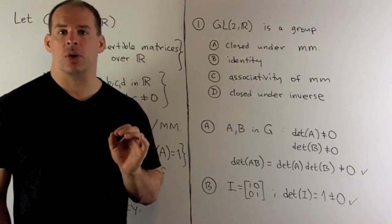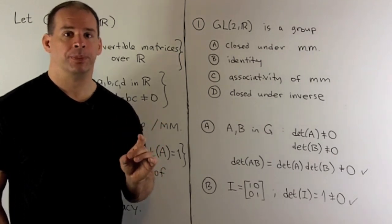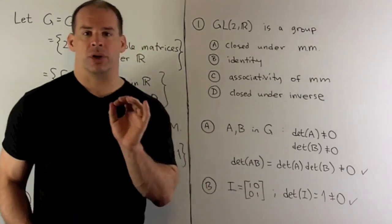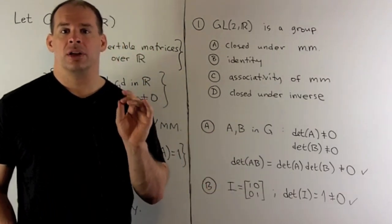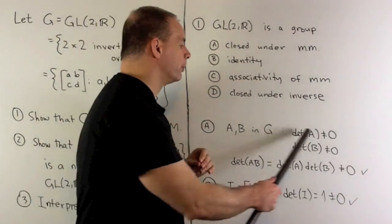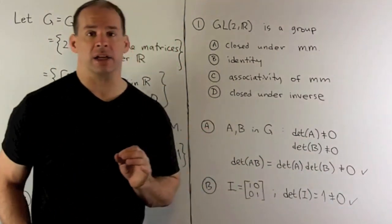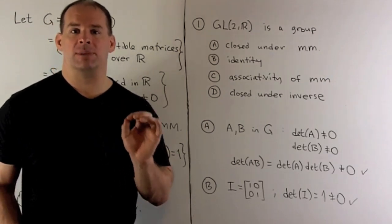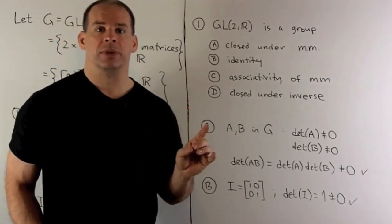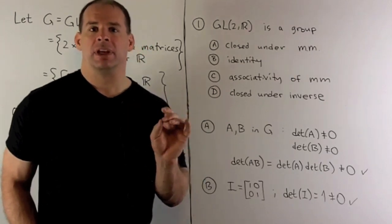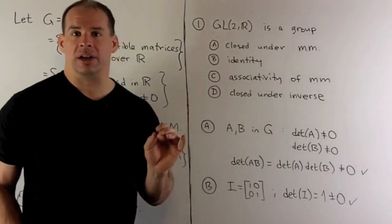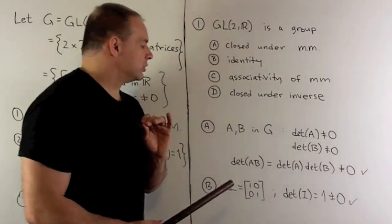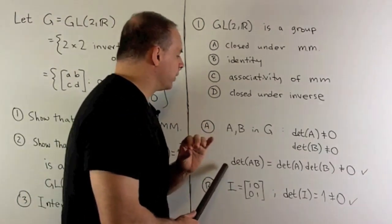Now to see that G is closed under matrix multiplication, we pick A and B in G, so those are going to be two by two matrices. They're invertible, so their determinants are non-zero. We take the product, so I want to check whether determinant of A times B is non-zero. If so, then A times B satisfies the defining property of G and so it's in there. Now to do that, we'll have a theorem from linear algebra.